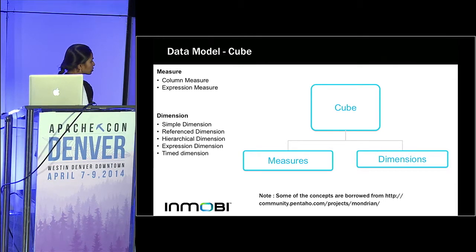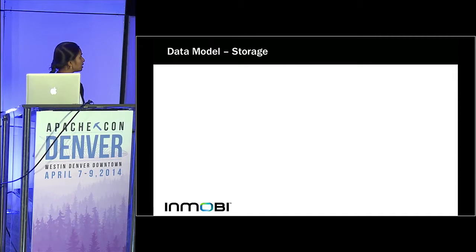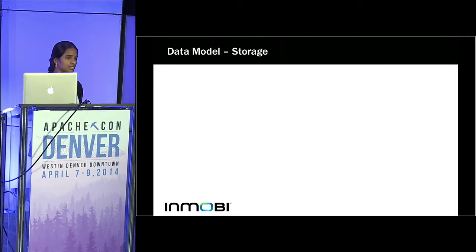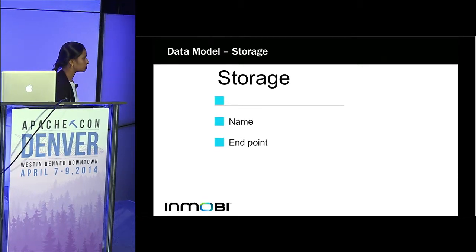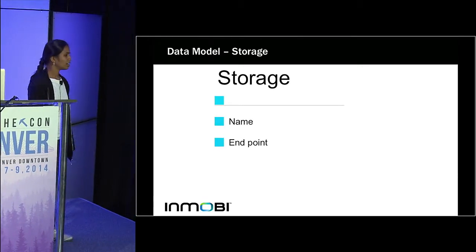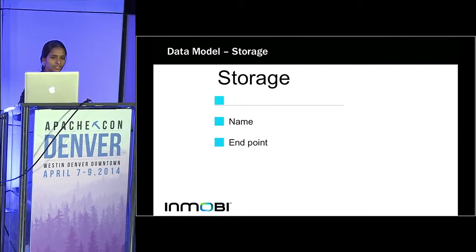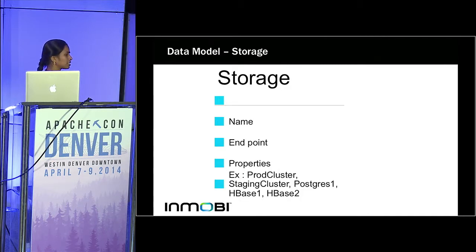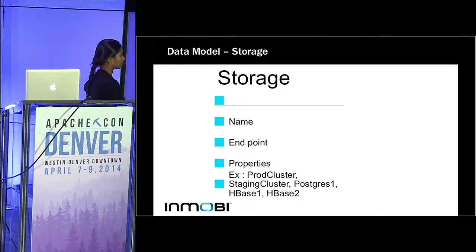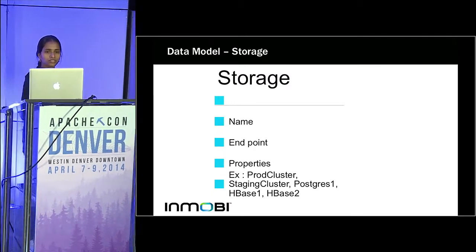Some of these concepts are taken from Mondrian. The next construct is storage. Storage is nothing but any storage out there that you want to define in the model — you give it a name, an endpoint, and associate some properties. For example, there is a production cluster, a staging cluster, a Postgres DB, an HBase cluster — all defined as named storages.